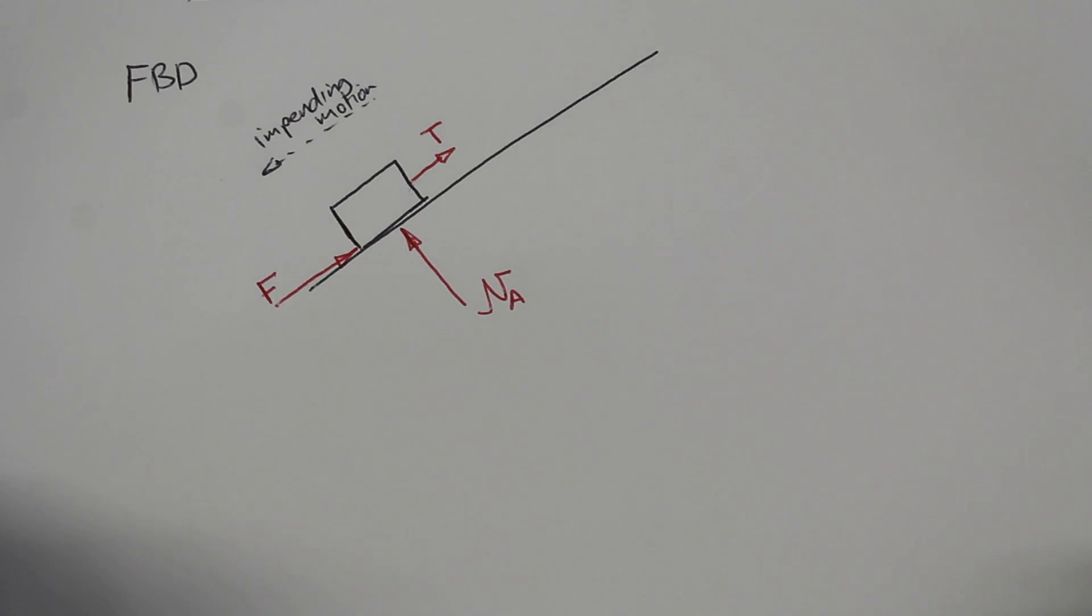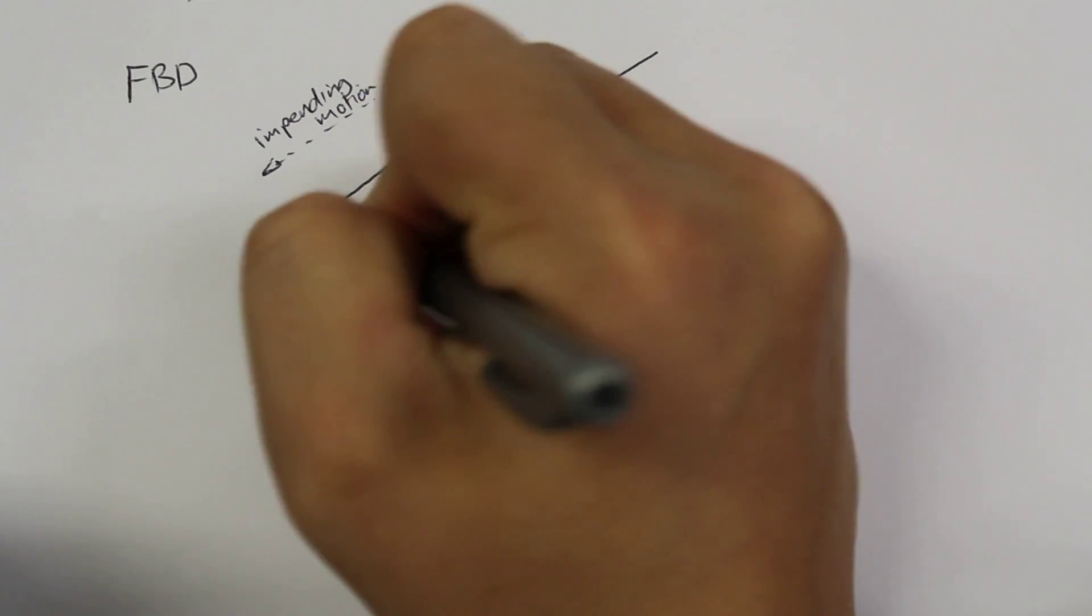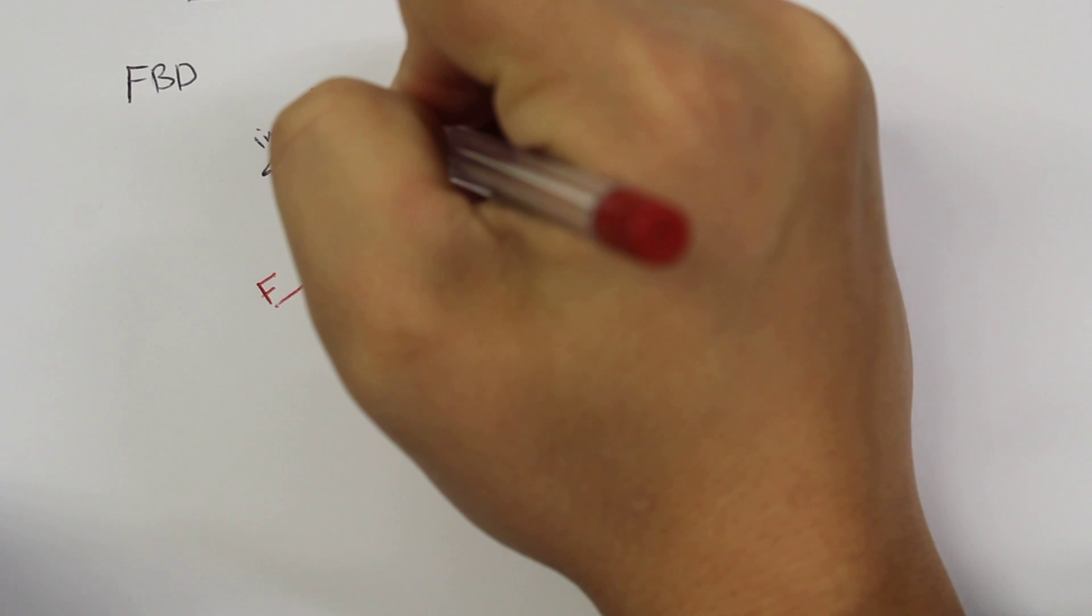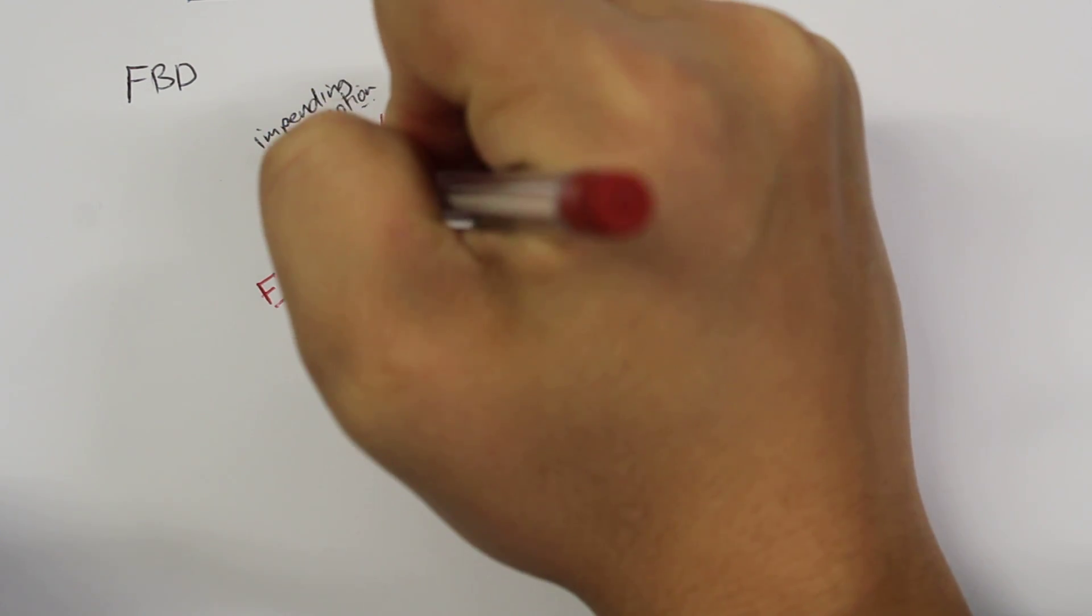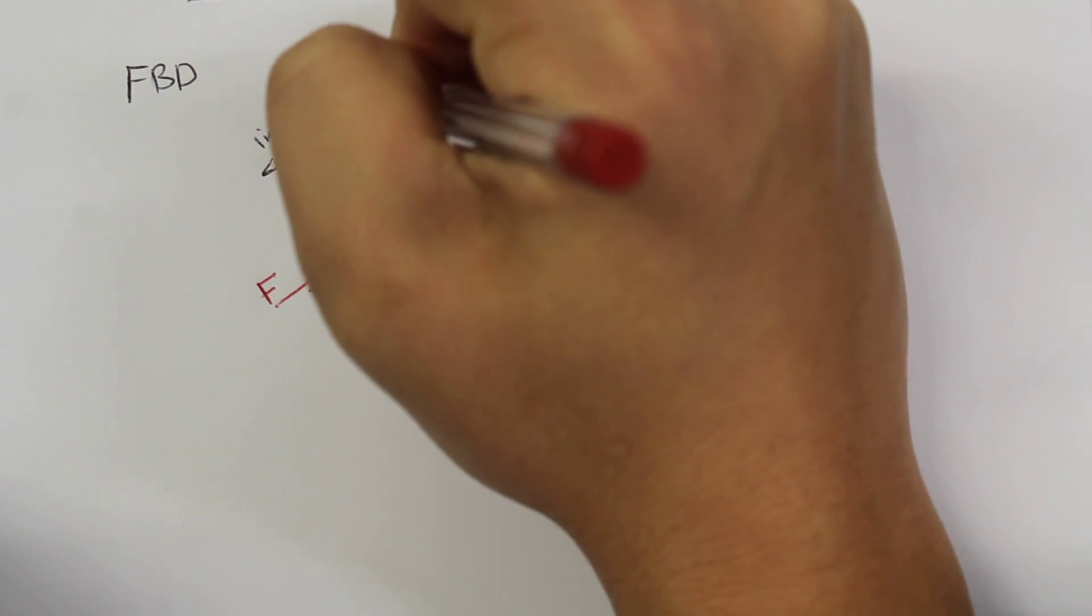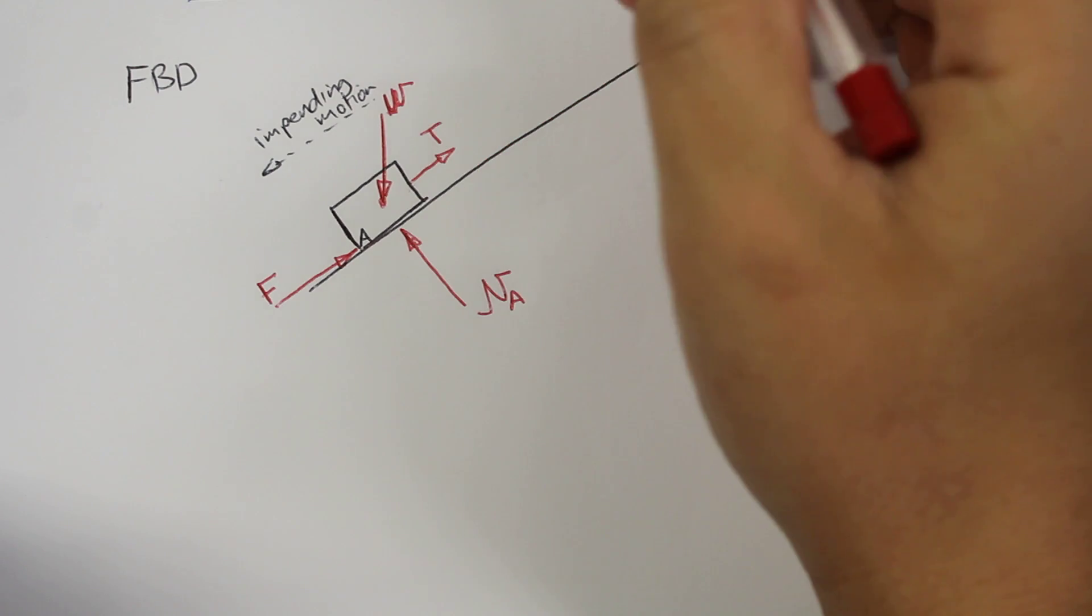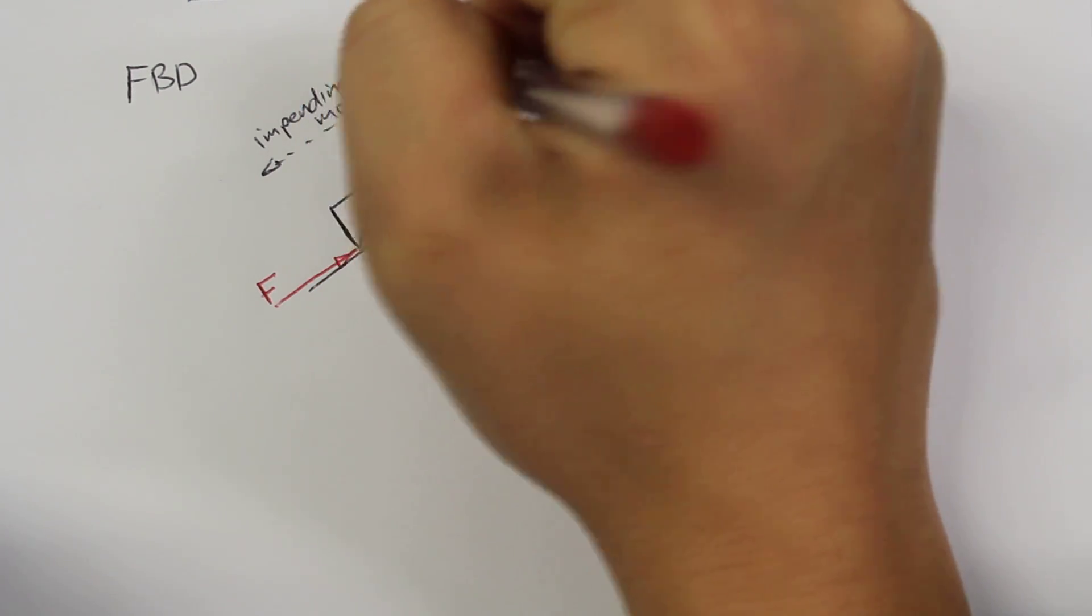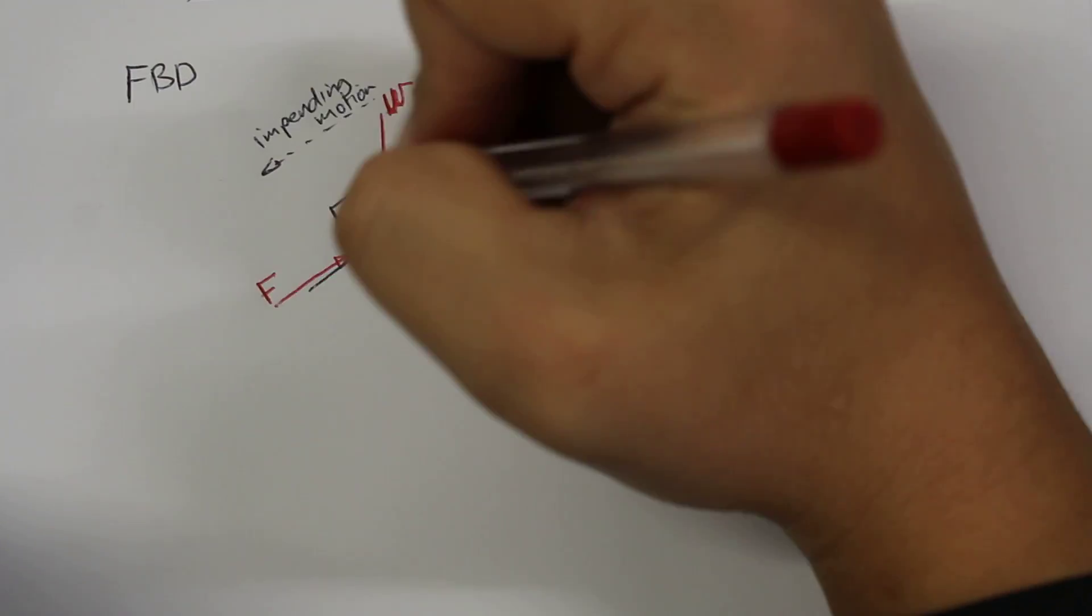We know that block A has a weight of 500 newtons, we'll assume that it's acting down. The weight of block A is going to be 500 newtons, so that was given to us.